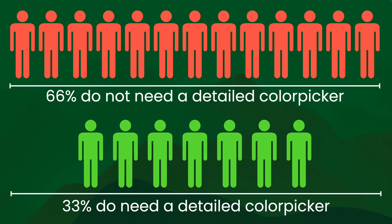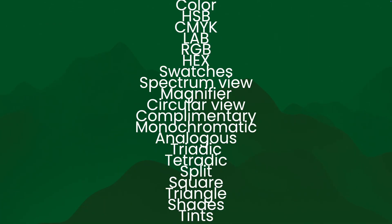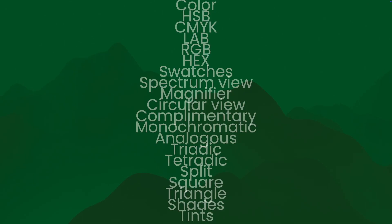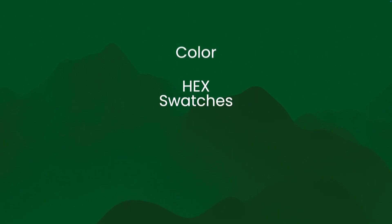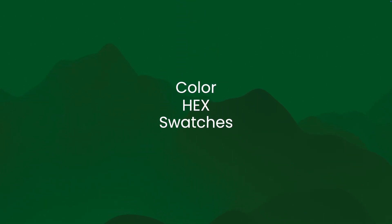And that means from a feature level, 66% of people do not need a detailed color picker, but 33% do need a detailed color picker. So we can see that a vast majority don't need a lot of features. We can make this much simpler. We don't really need all of those features — we just need a couple: color, hex, and swatches.